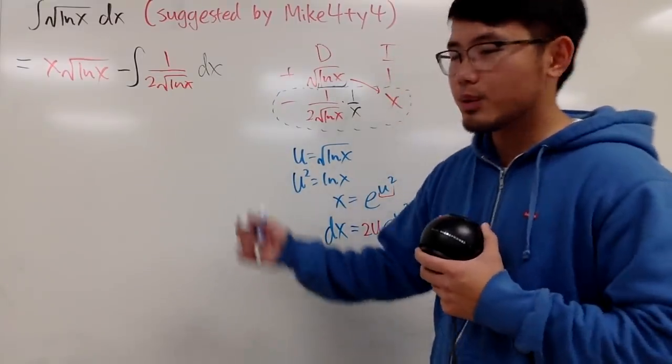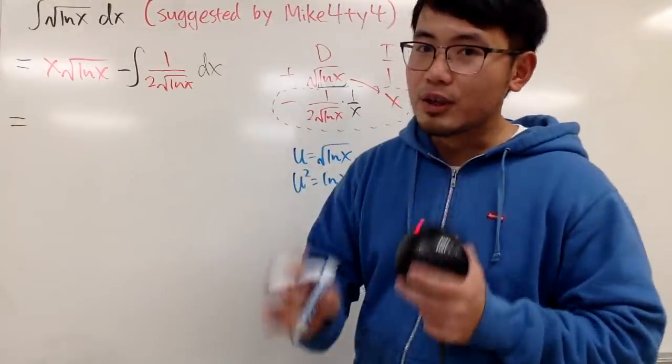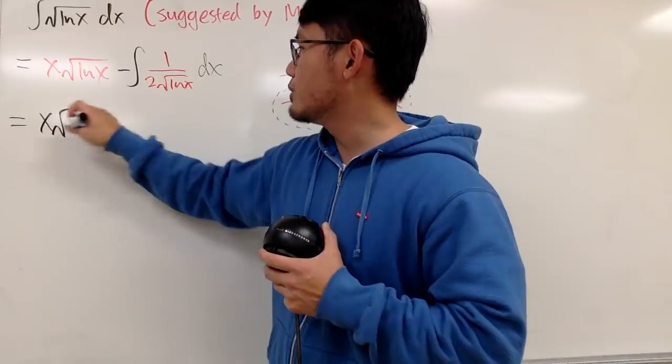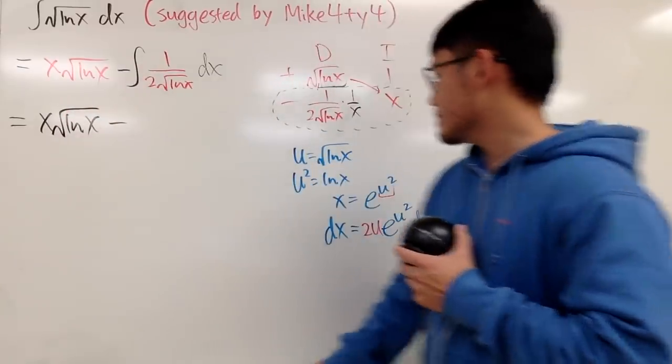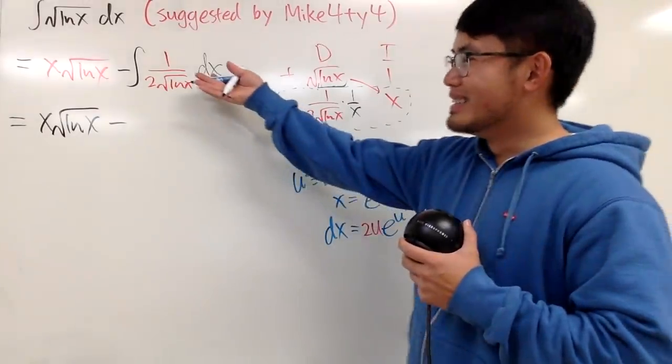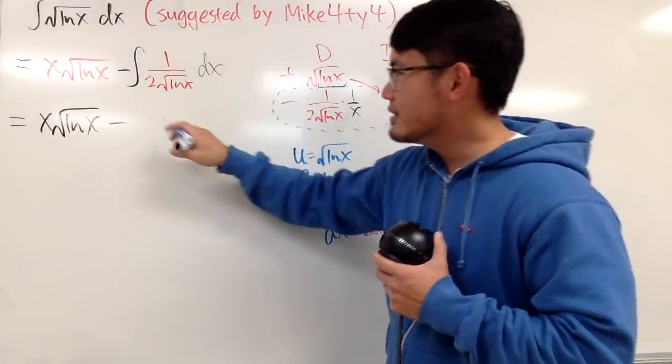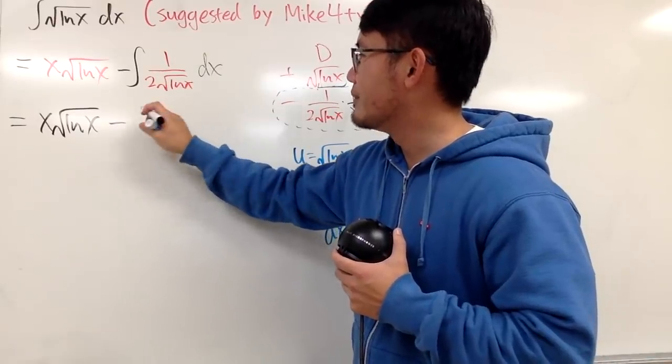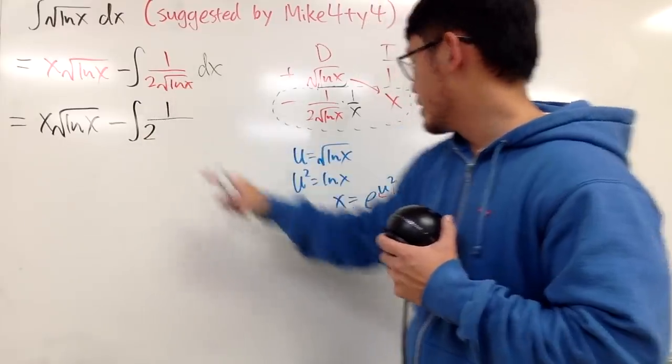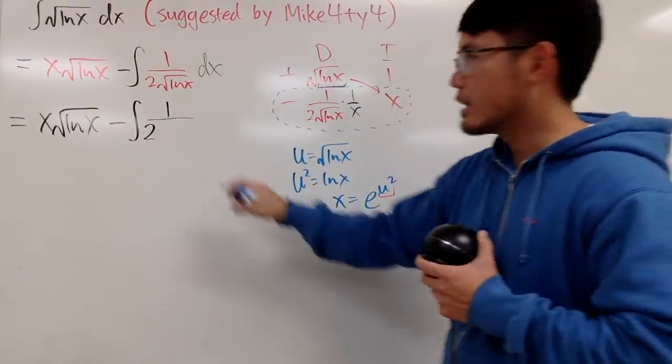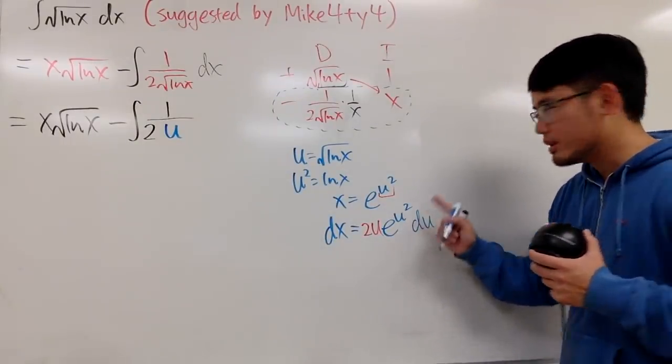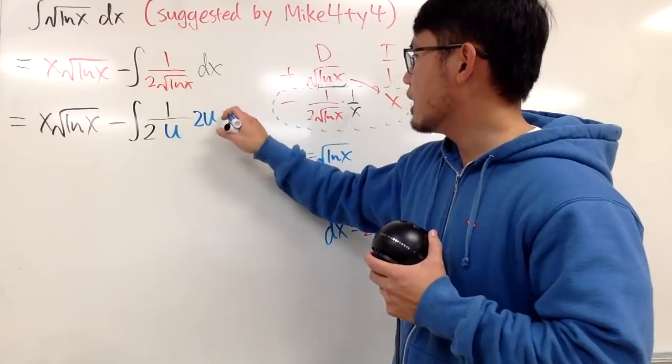And with that being said, we can come back here. This right here, it's the first part of the answer already. You're just going to write it down. x square root of natural log of x, and then minus, well, we still have to do the integral. This is just the integral in the x world. Take this integral to the u world. We have the integral 1 over this 2 stays. And this right here is the u, so I'll put that down. And then dx is this, namely 2u e to the u-squared du. So let's just write that down.